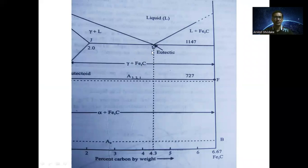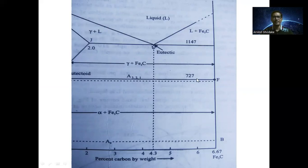When liquid converts into two solids at 1147 degrees Celsius and 4.3 percent carbon, such a transformation is called the eutectic transformation. The region above and below the eutectic line includes: liquid plus Fe₃C (cementite), austenite plus liquid iron, austenite plus cementite at 727 degrees Celsius, and below 727 degrees Celsius a mixture of alpha ferrite plus Fe₃C. This is the third type of transformation — the eutectic transformation.